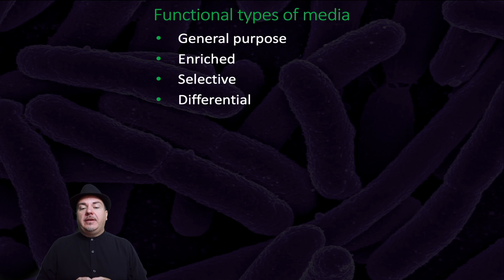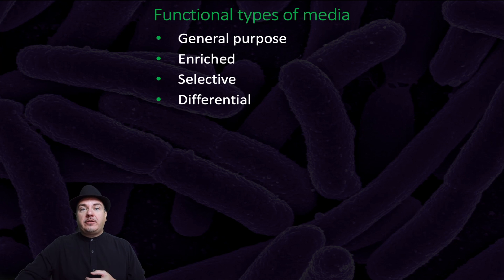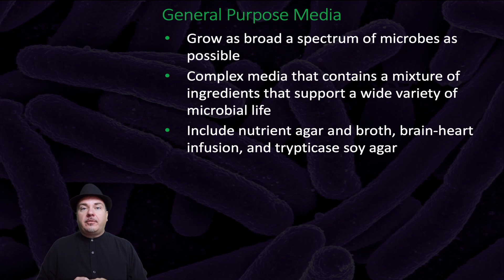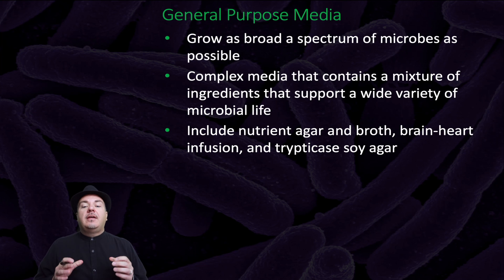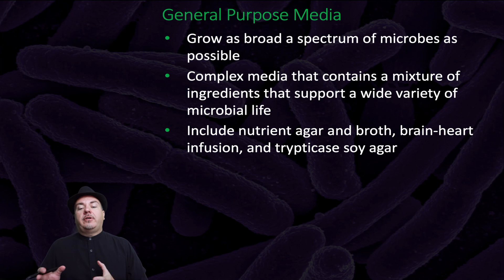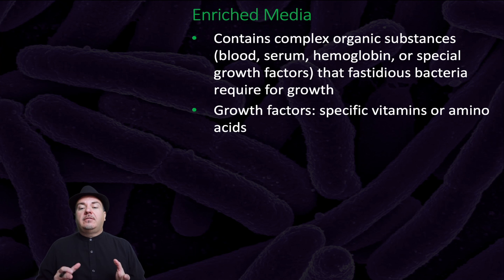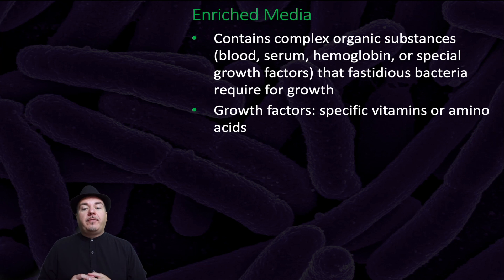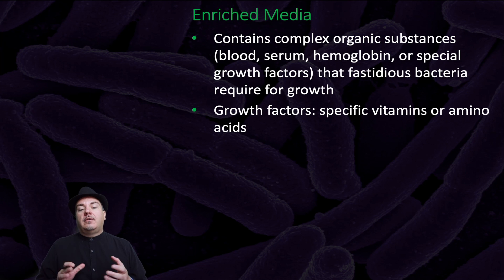As far as functional types of media, we have general purpose, enriched, selective, and differential. General purpose media grows as broad a spectrum of microbes as possible. It is complex media that contains a mixture of ingredients supporting a wide variety of microbial life, and includes nutrient agar and broth, brain heart infusion, and trypticase soy agar. Enriched media contains complex organic substances — blood, serum, hemoglobin, or special growth factors — that fastidious bacteria require for growth. Growth factors can be specific vitamins or amino acids.